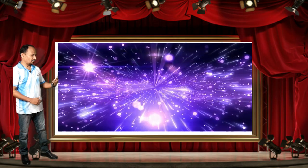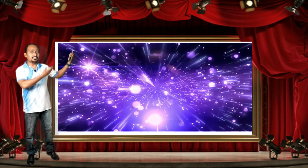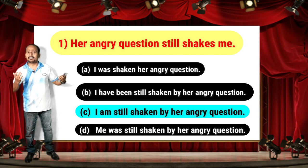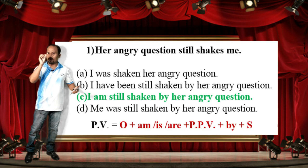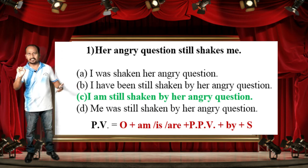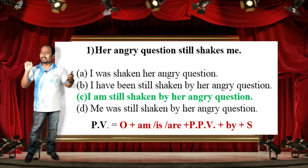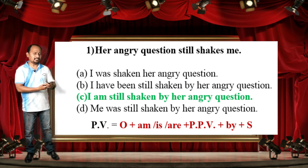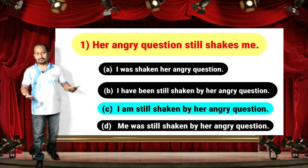The correct answer is: 'I am still shaken by her angry question.' The given sentence is in simple present tense, and the formula for passive voice is: Object + am/is/are + past participle of verb (PPB) + by + Subject. Using this formula gives us: 'I am still shaken by her angry question.'